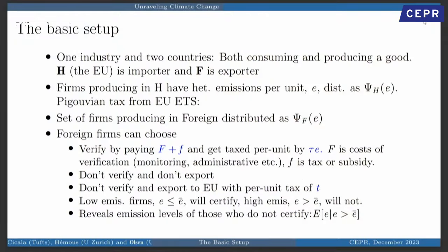A suggestion in our paper is to give foreign producers the following option: they can verify their emissions. That involves two costs — the actual administrative and certification cost, which is capital F — and then optionally you could subsidize that (little f negative) or tax it (little f positive). If they verify, they're taxed at little tau times their individual emission rate. You can set that rate Pigouvian if you want.